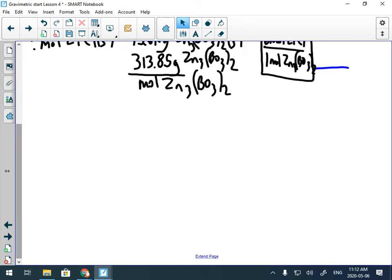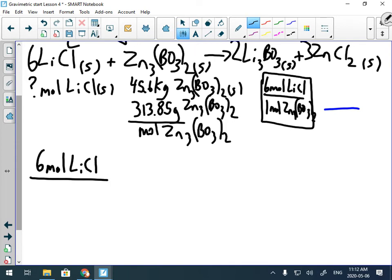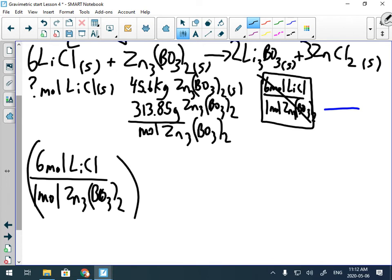All right. Let's start to solve this. What does the question want us to solve for? We need to solve for moles of lithium chloride. So I have to find moles lithium chloride. That's a mole, but that mole belongs to zinc borate. So I can't, oh, moles lithium chloride. So I'm actually going to start with the fraction. Six mole lithium chloride for every one mole zinc borate. That's BO3 subscript 2. I dyslexically mixed up those numbers. Can't use that anymore, right? Single use.